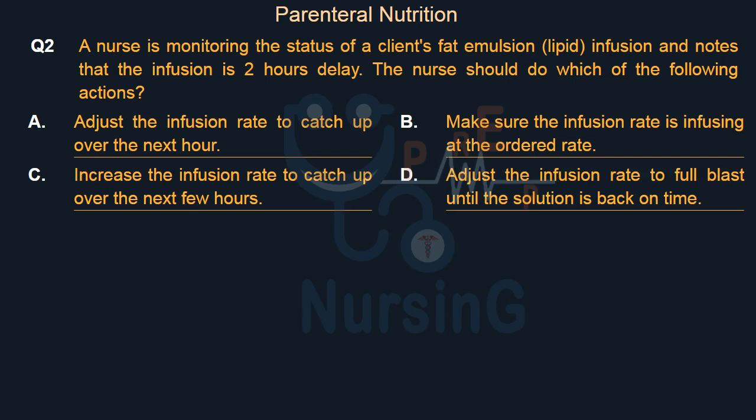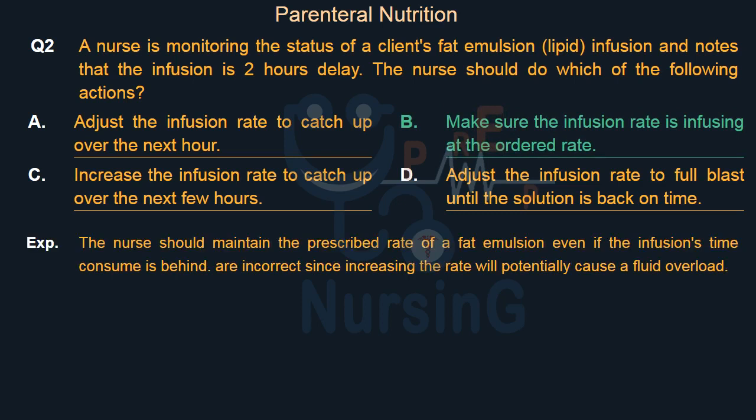Right answer is Option B: Make sure the infusion rate is infusing at the ordered rate. The nurse should maintain the prescribed rate of a fat emulsion even if the infusion's time consumed is behind. Incorrect options: increasing the infusion rate will potentially cause a fluid overload.